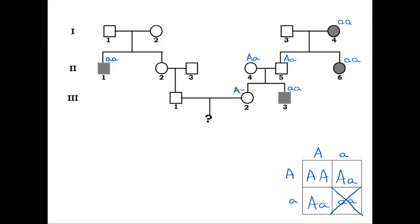So the mother's probability of being Aa, knowing that she is not affected by the trait, is two-thirds.